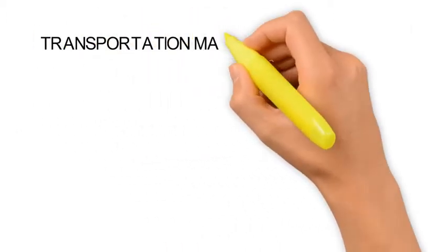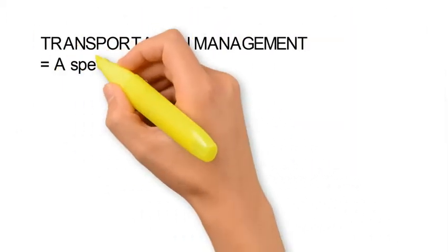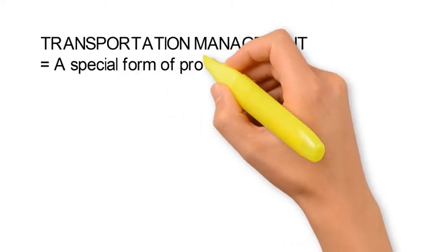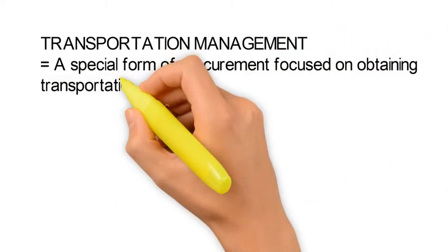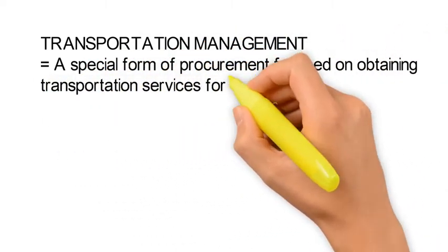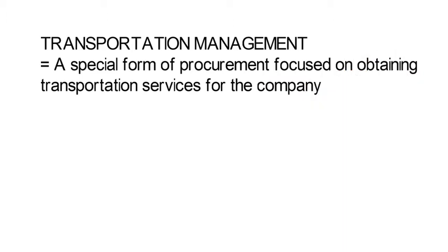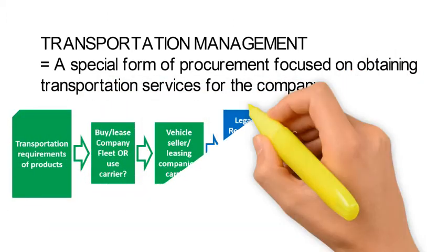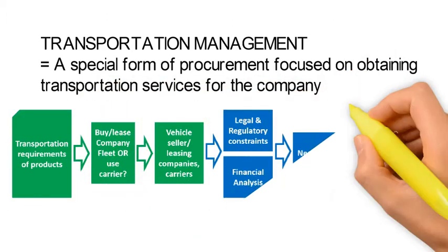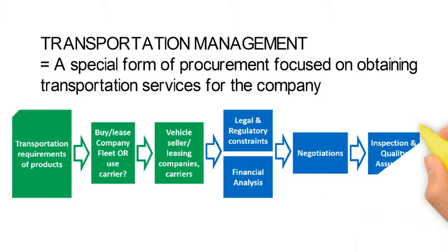Transportation management is just a specialised form of procurement focused on obtaining transportation services for the company. First, you determine the transportation requirements of your products. Then, you decide whether to buy or lease resources. And then, you figure out who your suppliers are. The rest is essentially the same.